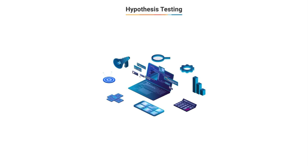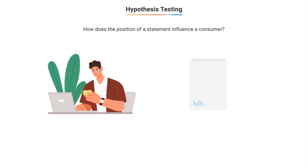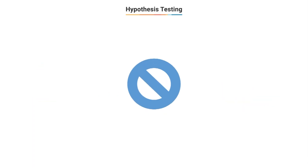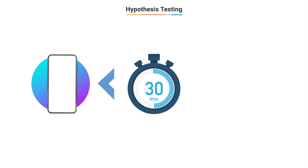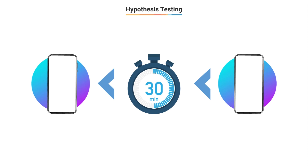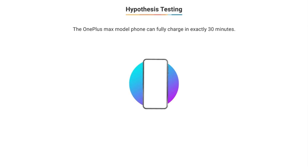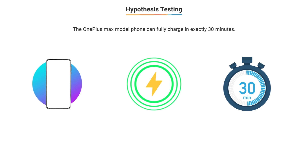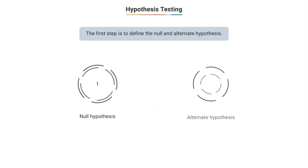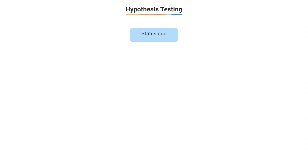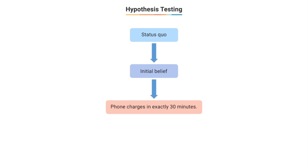Let us consider the same marketing example and understand hypothesis testing in depth. We'll test the claim that the new Max model takes exactly 30 minutes to charge, meaning we'll reject the claim if our test suggests the phone takes less than or greater than 30 minutes. The general approach in hypothesis testing is that we start by assuming that the claim is true — that the Max model phones can fully charge in exactly 30 minutes. The first step is to define the null and alternate hypothesis. The null hypothesis, denoted as H0, states the default assumption about the population and is generally the status quo — the initial belief before we began hypothesis testing.